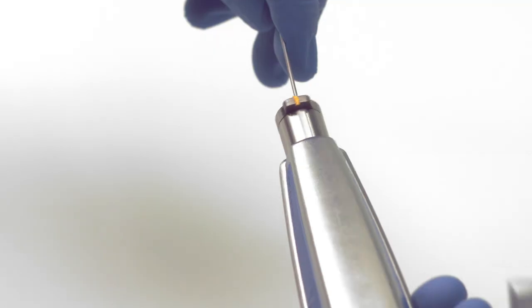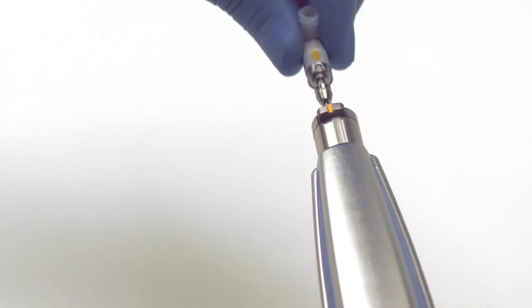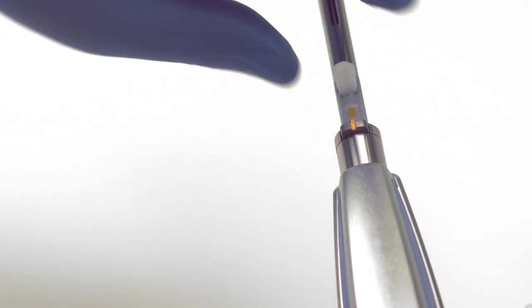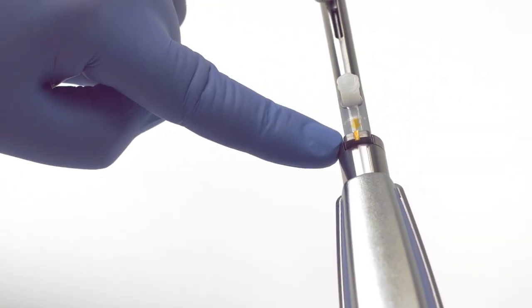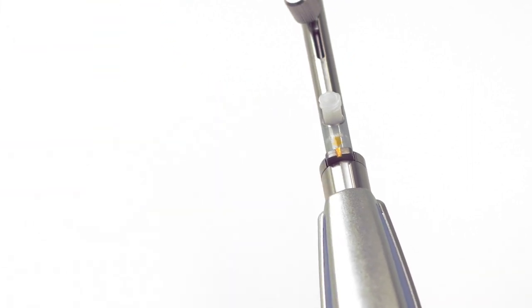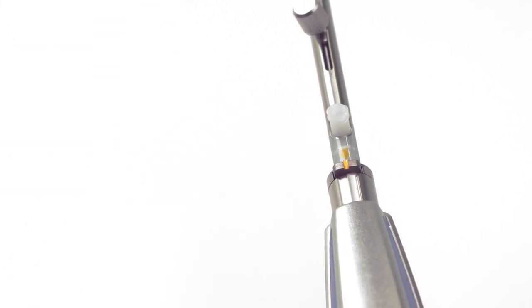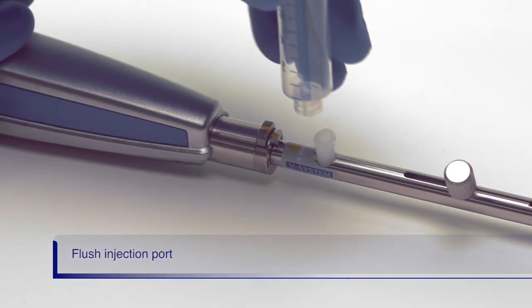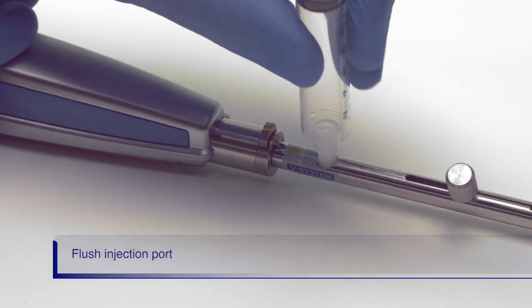Next, we need to align the yellow arrow on the end of the basket to the yellow marks on the handle. Push the basket end into the handle until you feel or hear a click. Flush the injection port prior to passing the basket into the scope.